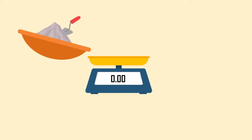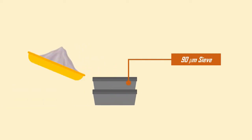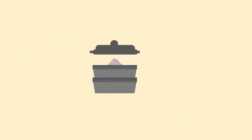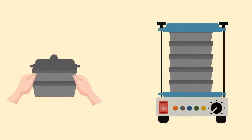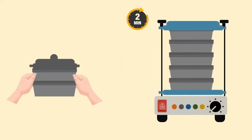Take a cement sample of 100 grams, which is free from lumps, and note it as W1. Transfer the cement sample into the 90 micron sieve and fit the lid over the sieve. Now place the sieve in the sieve shaking machine for 2 minutes.